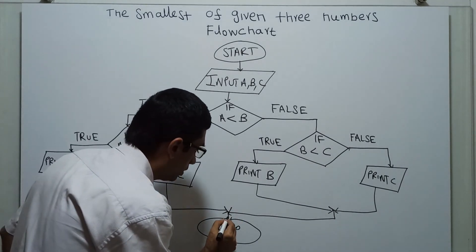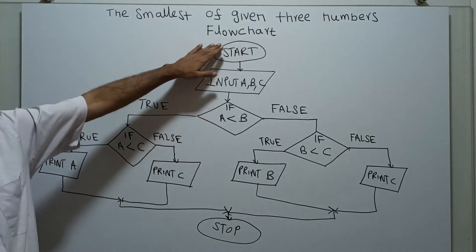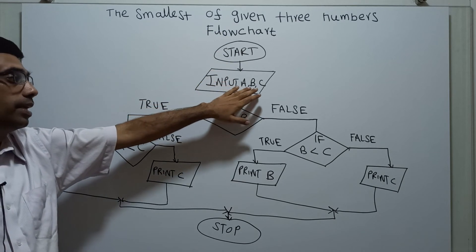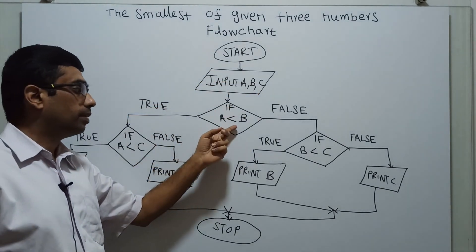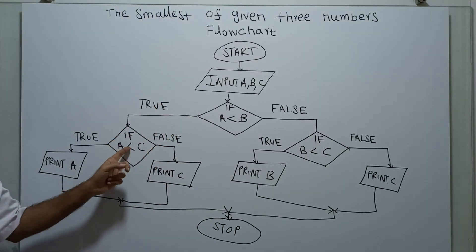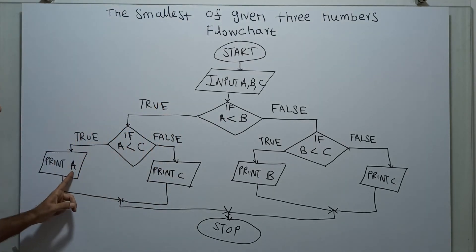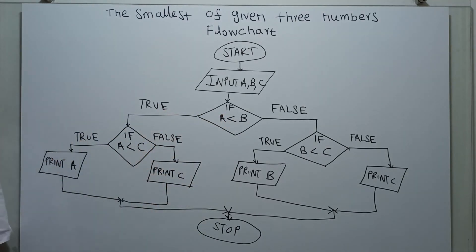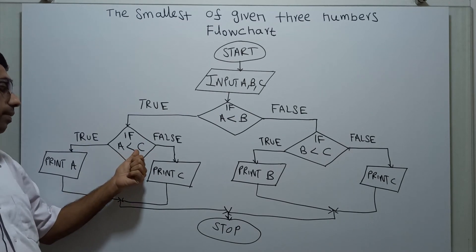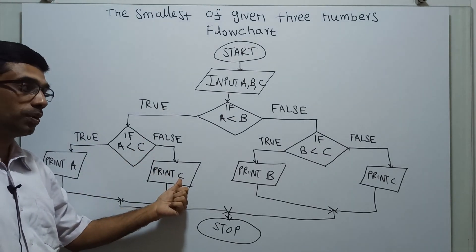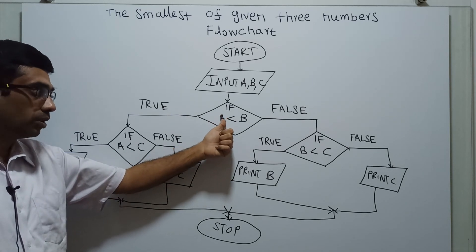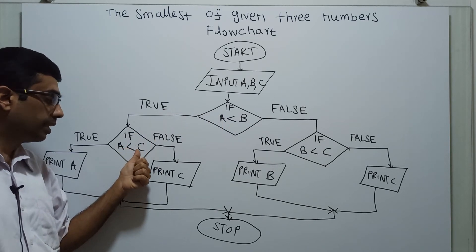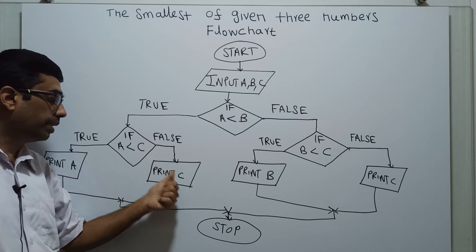I have to explain once again. It's the start of the flowchart. I am obtaining three values from the user: A, B and C. I am comparing if A is lesser than B — it is true. I am comparing A is lesser than C — it is also true, so print A, because A is the smallest number, which is lesser than B and lesser than C. If A lesser than C is false, I am printing C — C is the smallest. The reason: A lesser than B is true, that means A is lesser than B, but A is not lesser than C, so C is lesser than A and I am printing C.